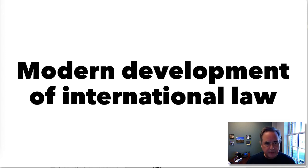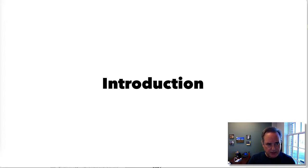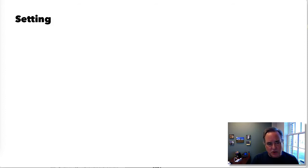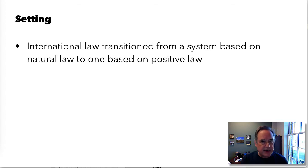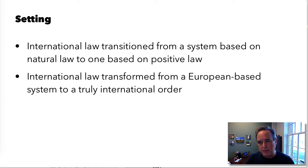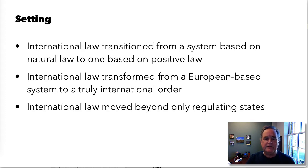In this lecture, we're going to look at the development of international law, beginning in the latter years of the 19th century and continuing to the modern day. Essentially, we know that international law has transitioned from a system based on natural law to one based on positive law, transformed from a European-based system to a truly international order, and has moved beyond just regulating states to include regulation of other parties and entities as well.